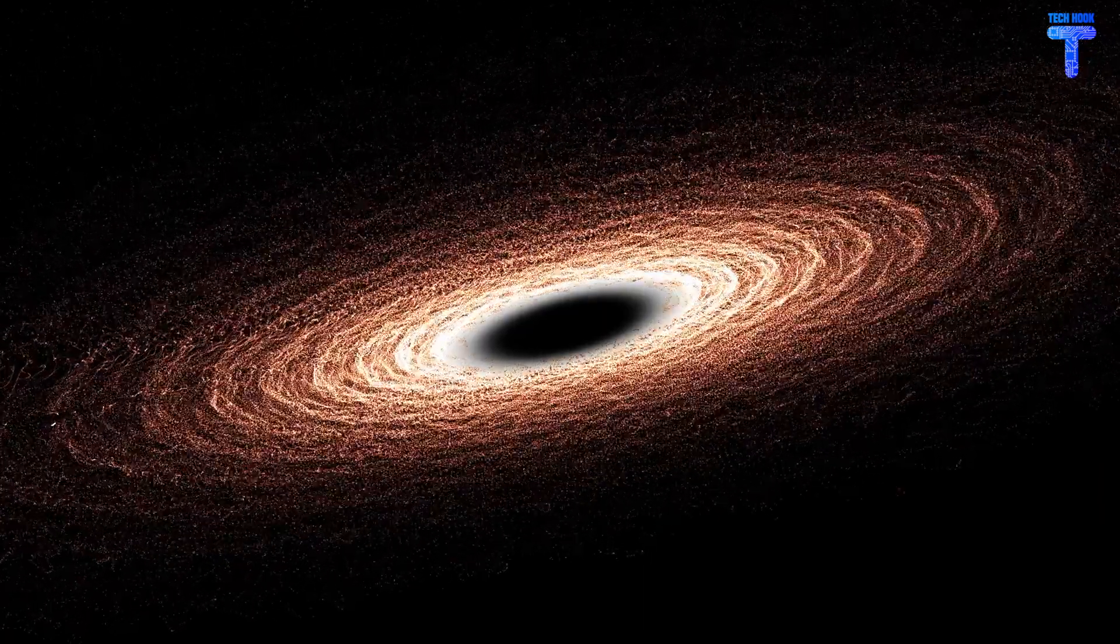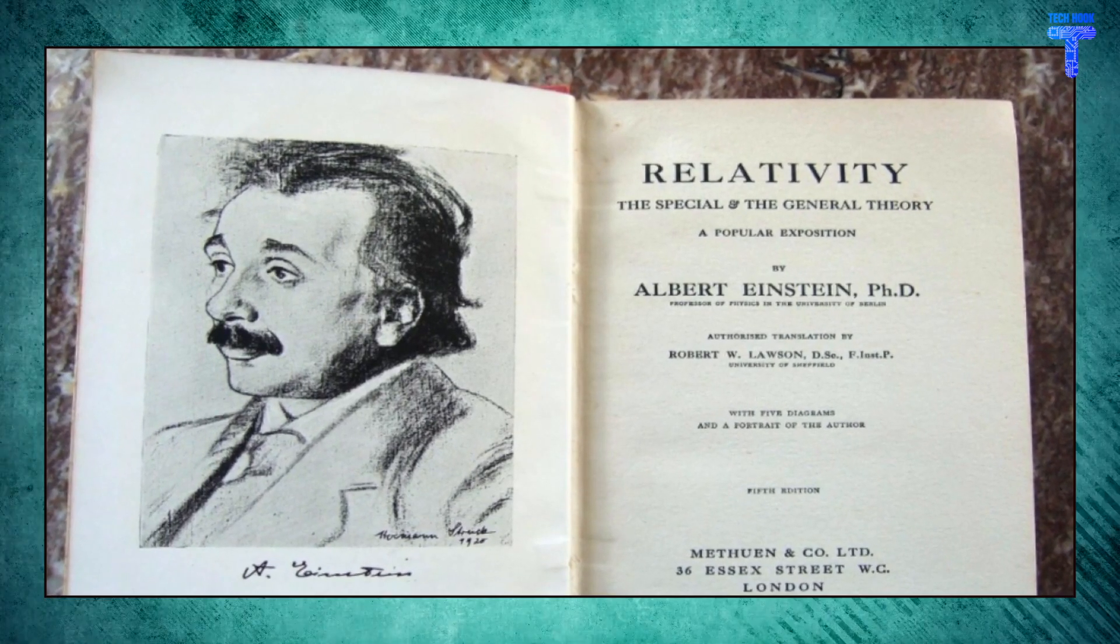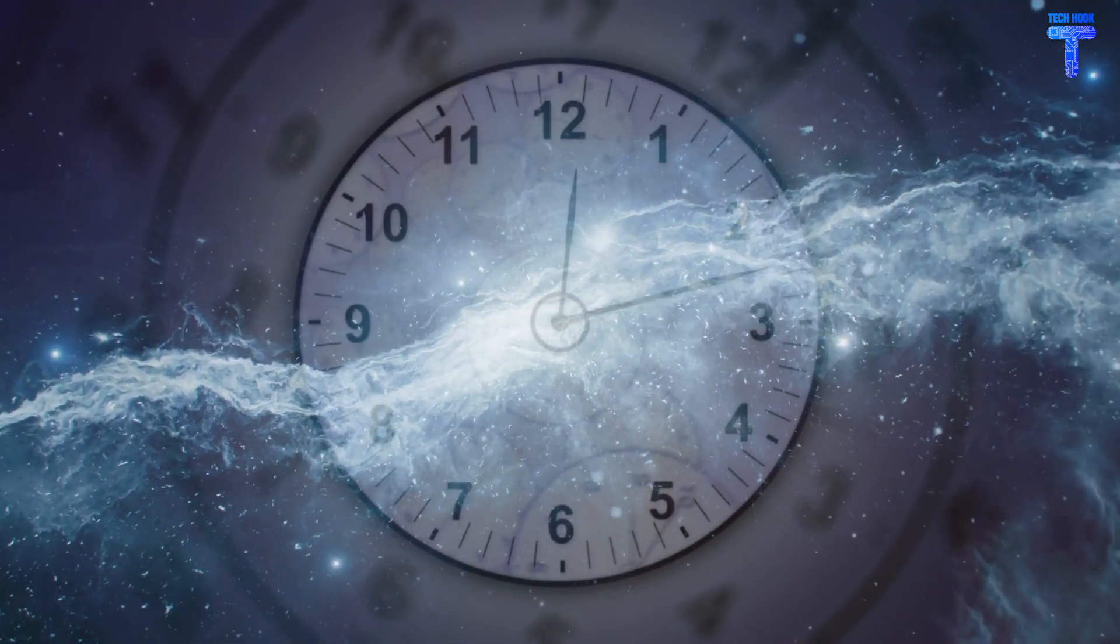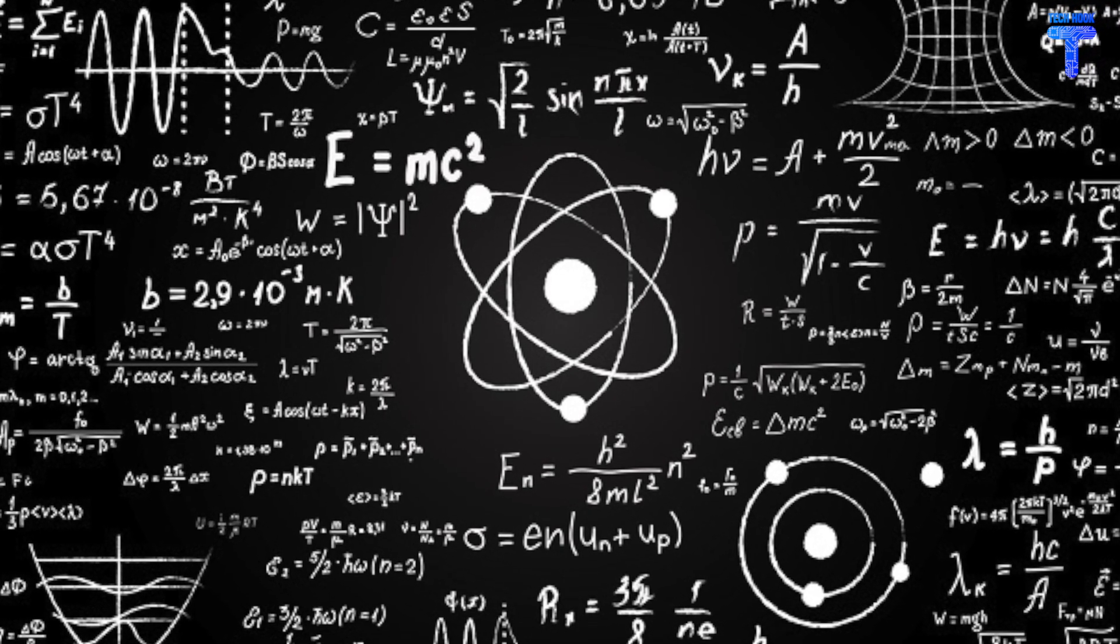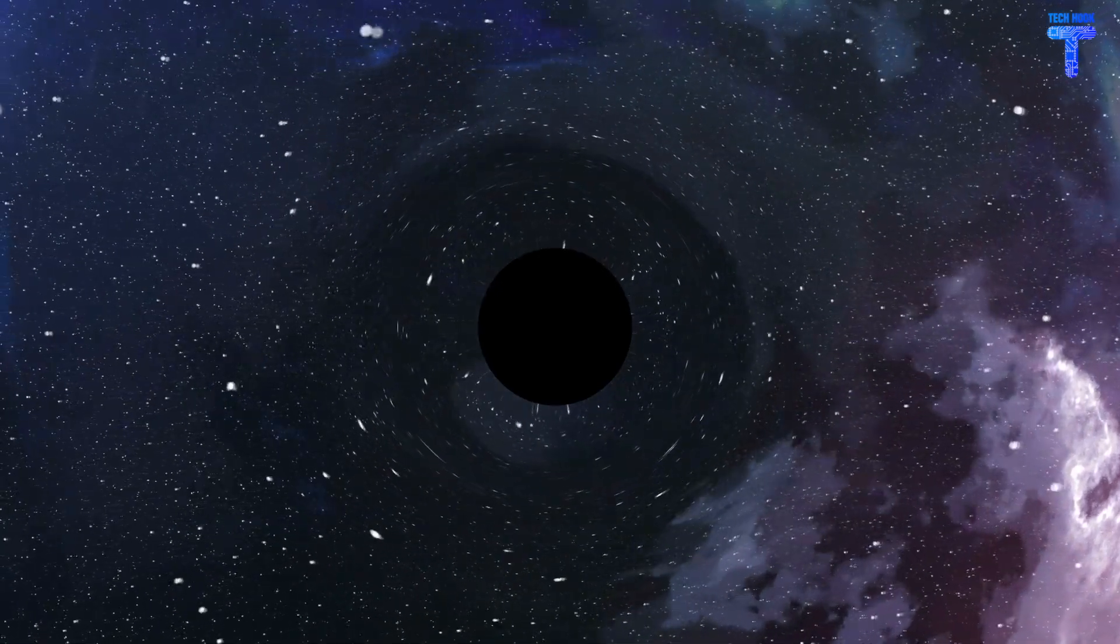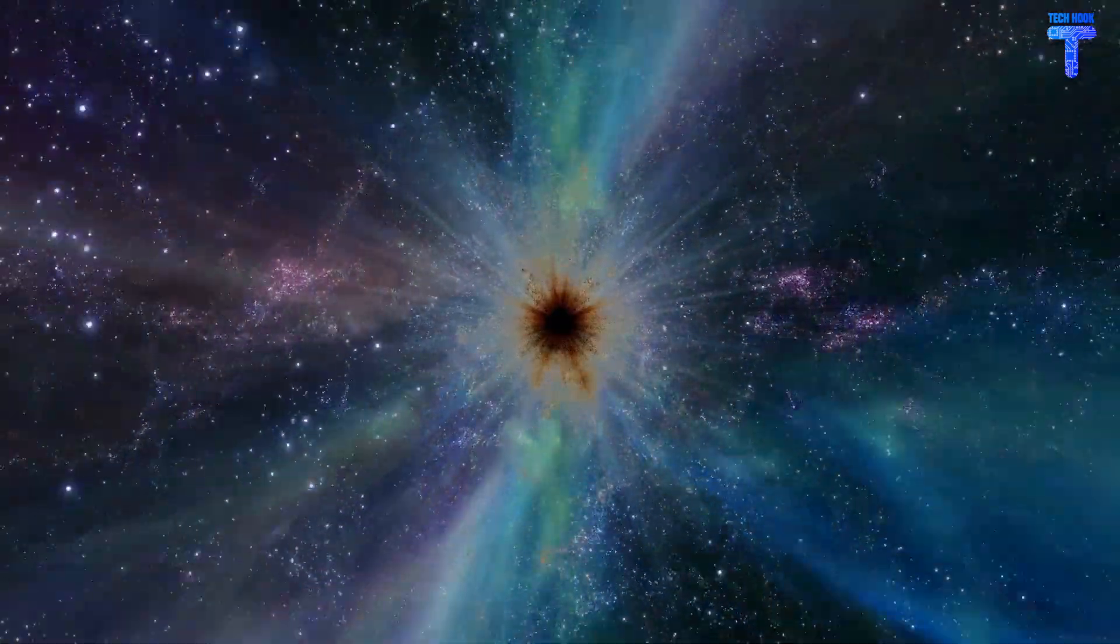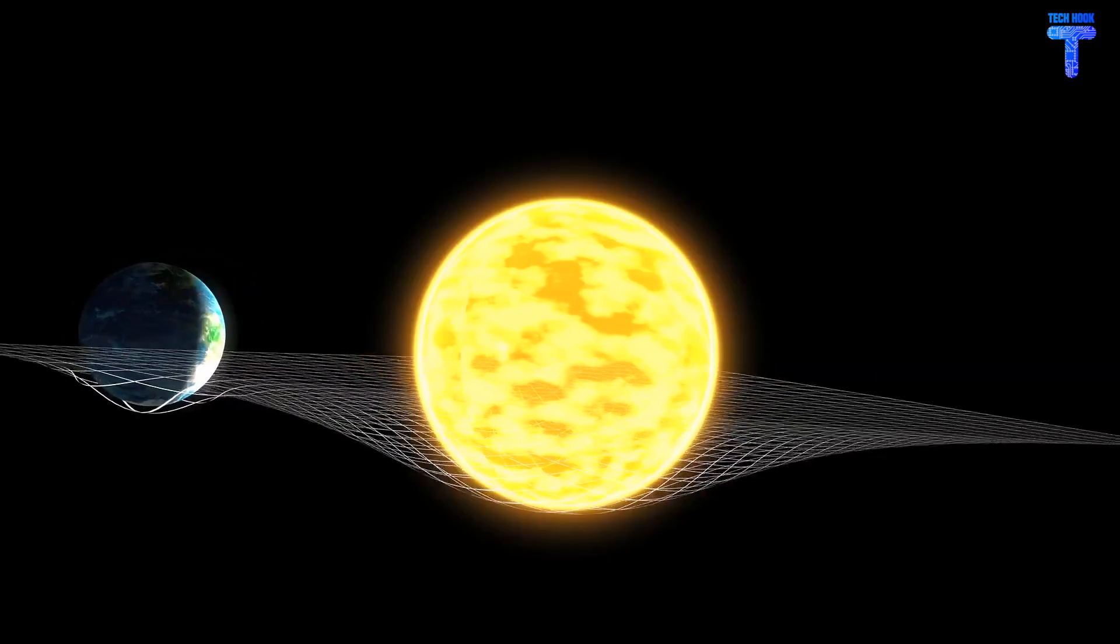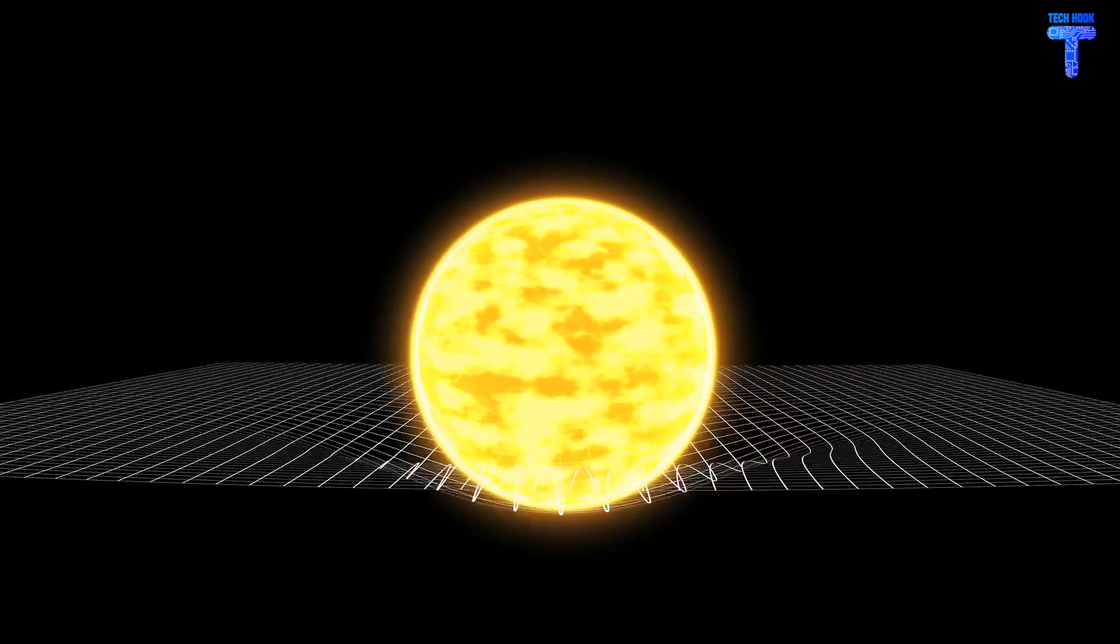Black holes were first predicted by Einstein when he released his 1916 paper on the general theory of relativity, which talked about space and time as being interwoven to constitute space-time. As he worked out the equations for his general theory of relativity, Einstein realized that massive objects cause a distortion in space-time. The term black hole was coined many years later in 1967 by American astronomer John Wheeler.